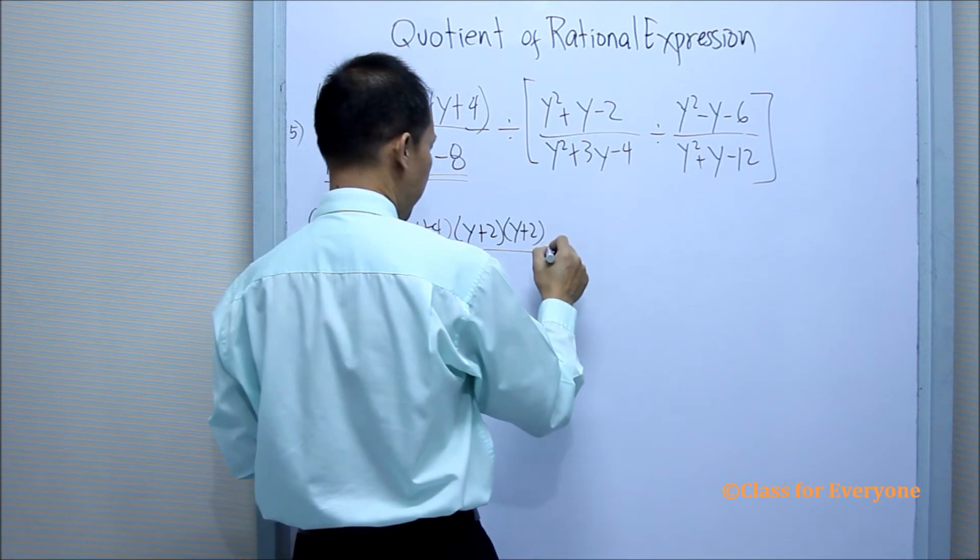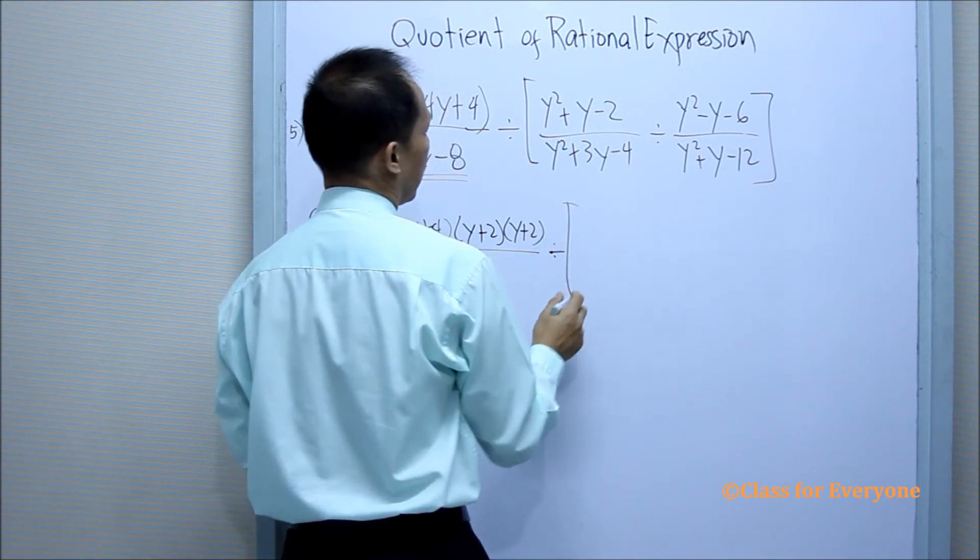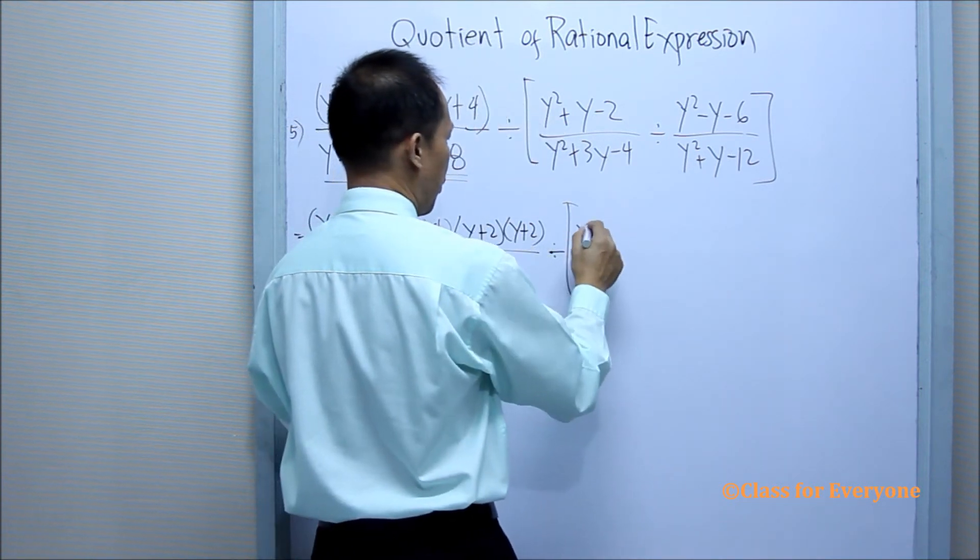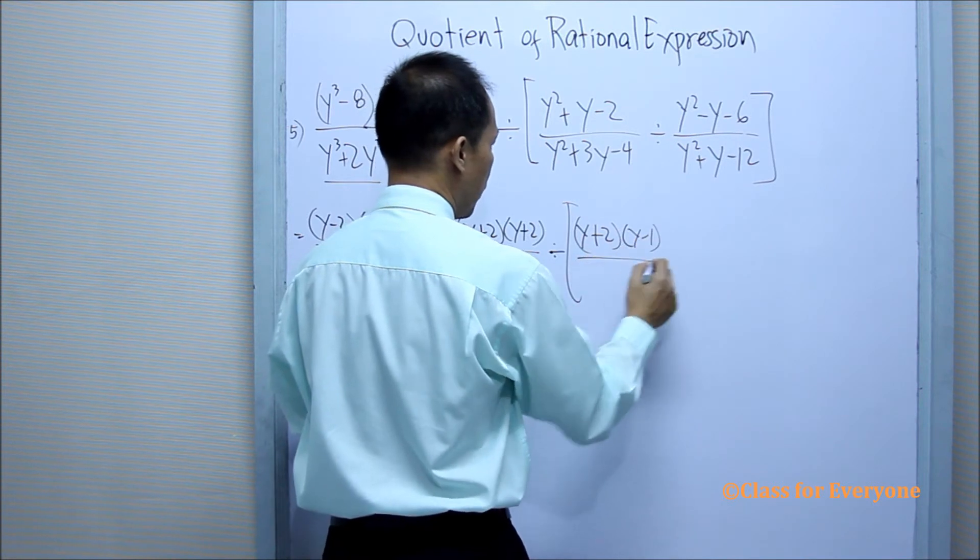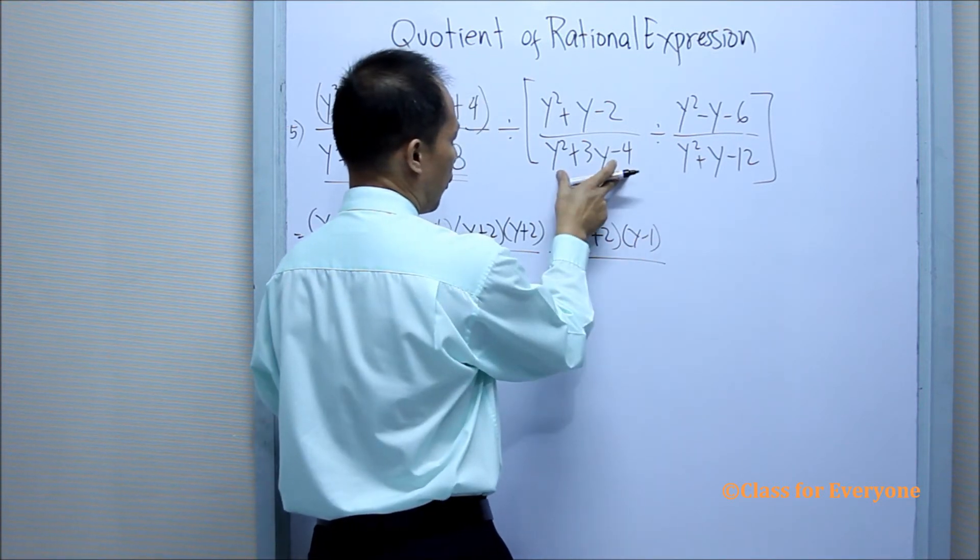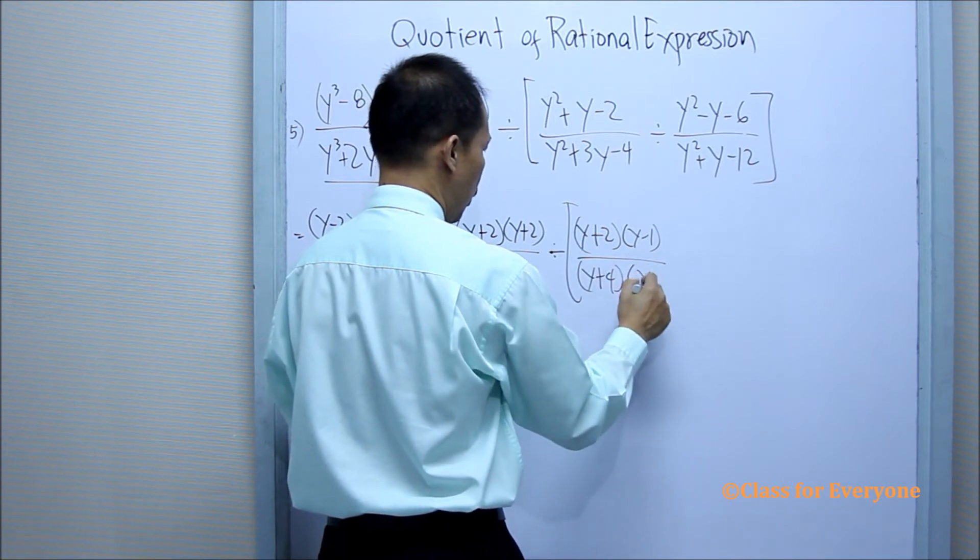We can factor this as y plus 2 and y minus 1 all over. Factors are y plus 4 and y minus 1.